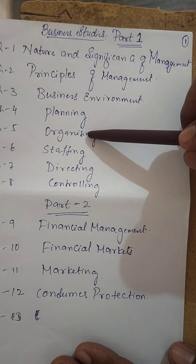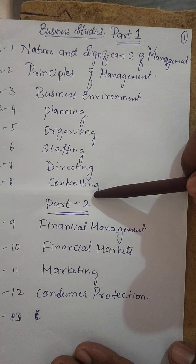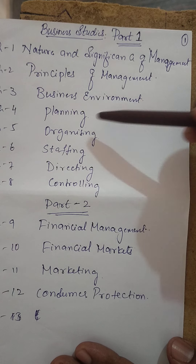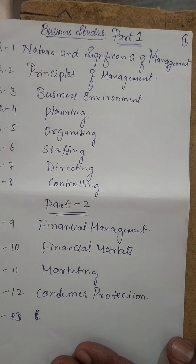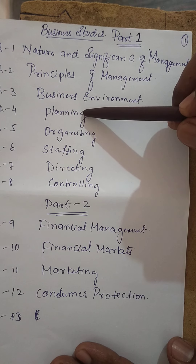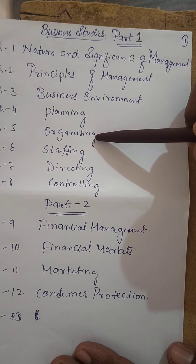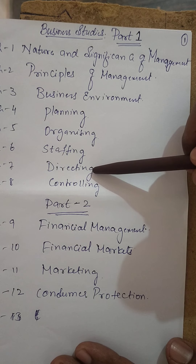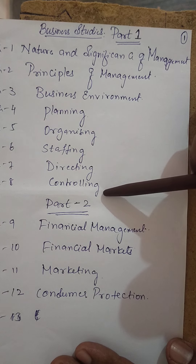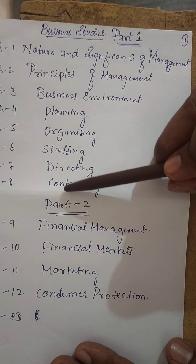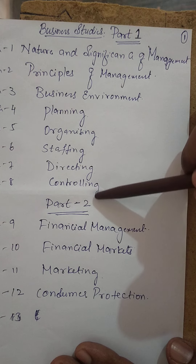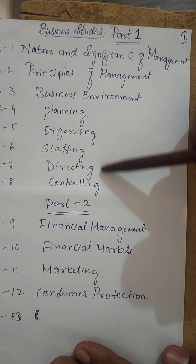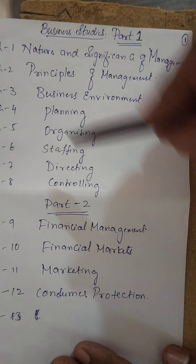Chapters four through eight cover planning, organizing, staffing, directing, and controlling. These are given individually because without them no management can function in any organization. After planning, things must be organized; after organizing, staffing is done; after staffing, staff need direction; and after directing, there should be complete controlling over the process of production.